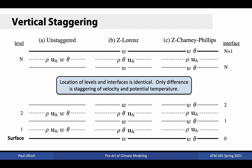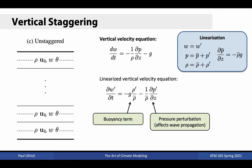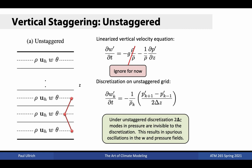Under vertical Lorentz staggering, the vertical velocity is instead placed on model interfaces, allowing it to be exactly prescribed as part of the boundary conditions at the model bottom and top. Under vertical Charney-Phillips staggering, the vertical velocity and potential temperature are both placed on vertical interfaces, while density and horizontal velocity remain on levels. To understand computational modes, we examine the vertical velocity equation linearized about a stationary, vertically dependent, hydrostatically balanced reference state. Two terms arise: a buoyancy term related to density perturbations, and a term associated with pressure gradients and wave propagation.